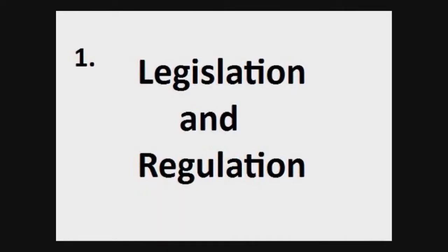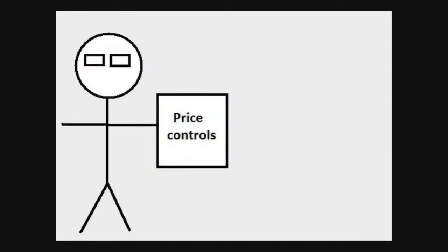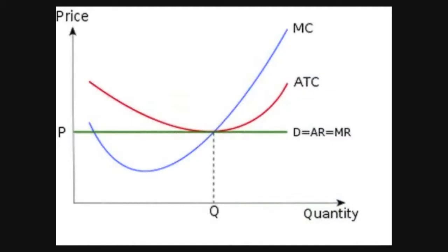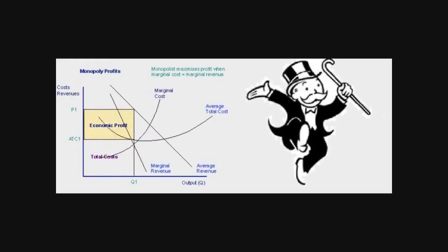Firstly, legislation and regulation. The government can appoint regulators who impose price controls in most of the main utilities such as telecommunications, electricity, gas and rail transport. Regulation may be used to raise competition in a market, for example loosening existing monopoly power.